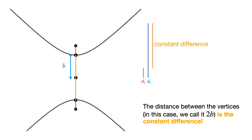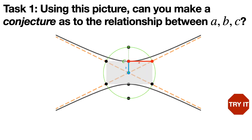If it was a horizontal hyperbola the constant difference would have been 2a. Here's a task: because we have these three letters a, b, and c, using this picture and the circle drawn here, can you make a conjecture as to the relationship between a, b, and c? Try it out. Think about it. This is a very informal exercise, but see if you can find a relationship just from this picture.